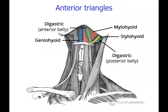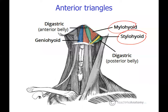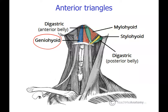The digastric muscle has an anterior belly and a posterior belly. The stylohyoid muscle is attached between the styloid process and the hyoid bone. The mylohyoid muscle is like a sheet that forms the floor of the mouth. The geniohyoid muscle lies deep to the mylohyoid muscle, so the mylohyoid must be removed to show the geniohyoid. That makes four suprahyoid muscles: digastric with its two bellies, stylohyoid, mylohyoid, and geniohyoid.